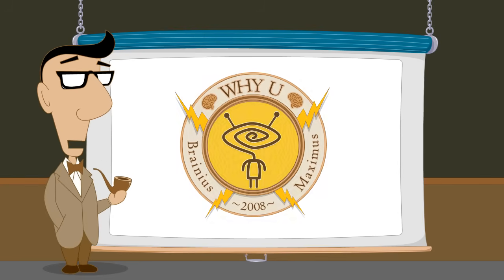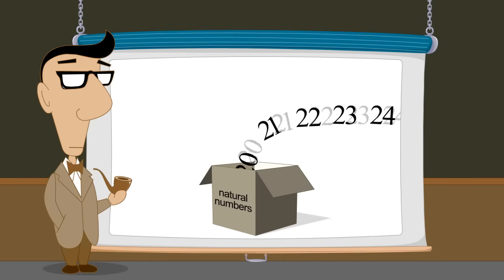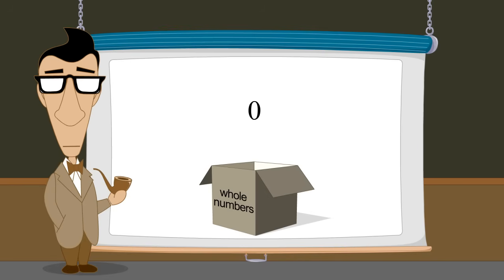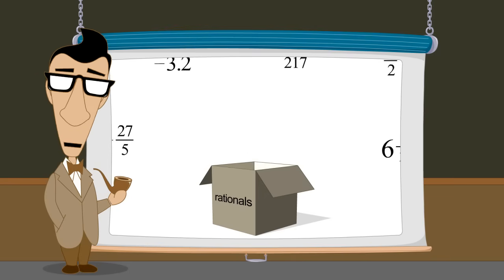In our lectures so far, we have seen how numbers evolve from the primitive concept of natural counting numbers to whole numbers with the addition of the number zero, integers with the addition of negative numbers, and then rational numbers.